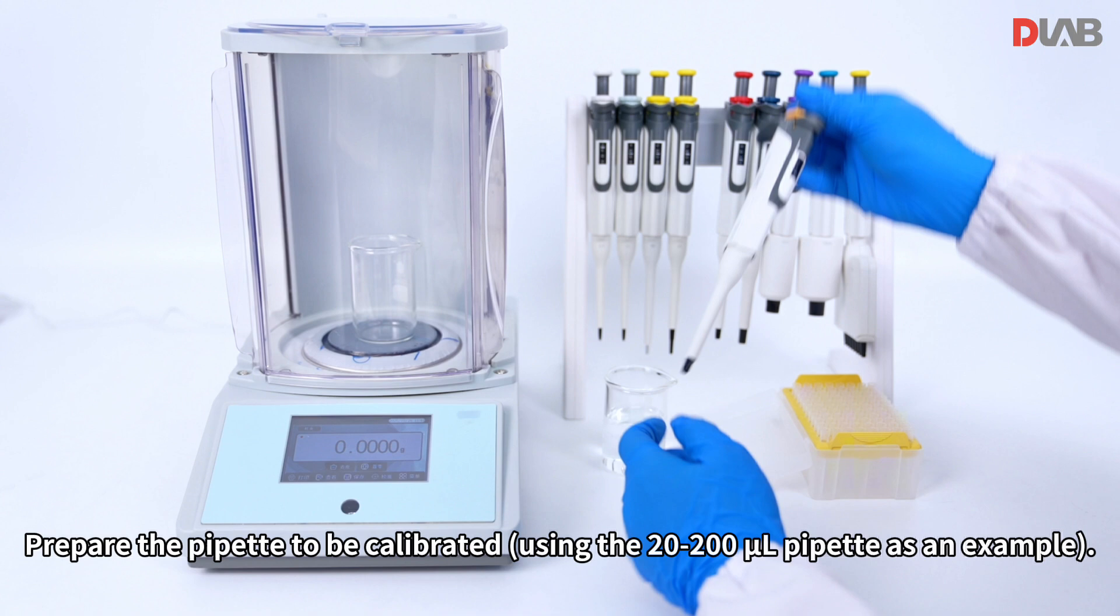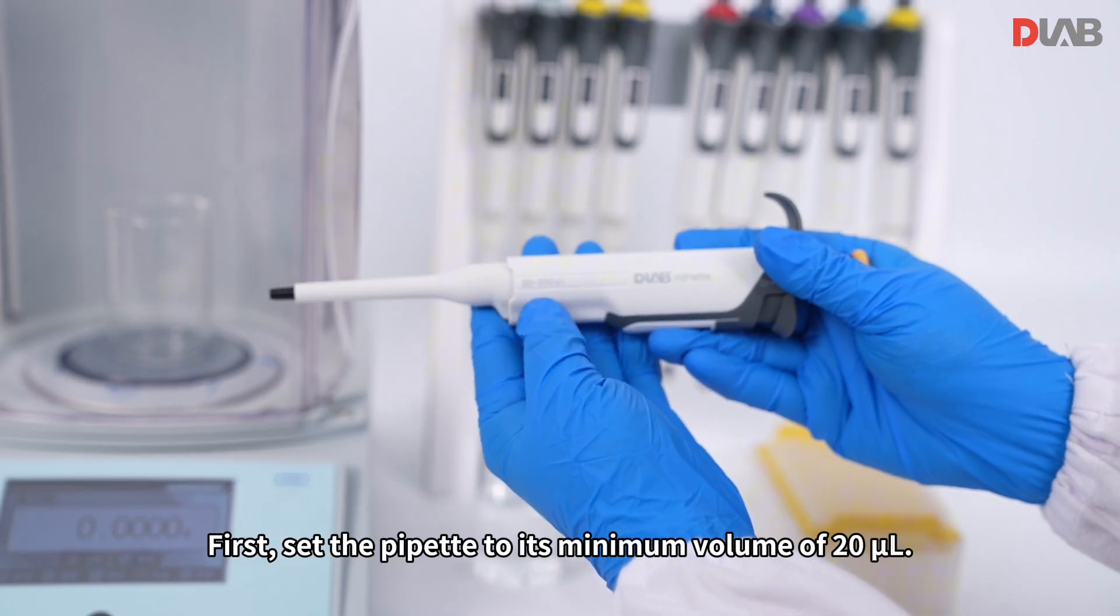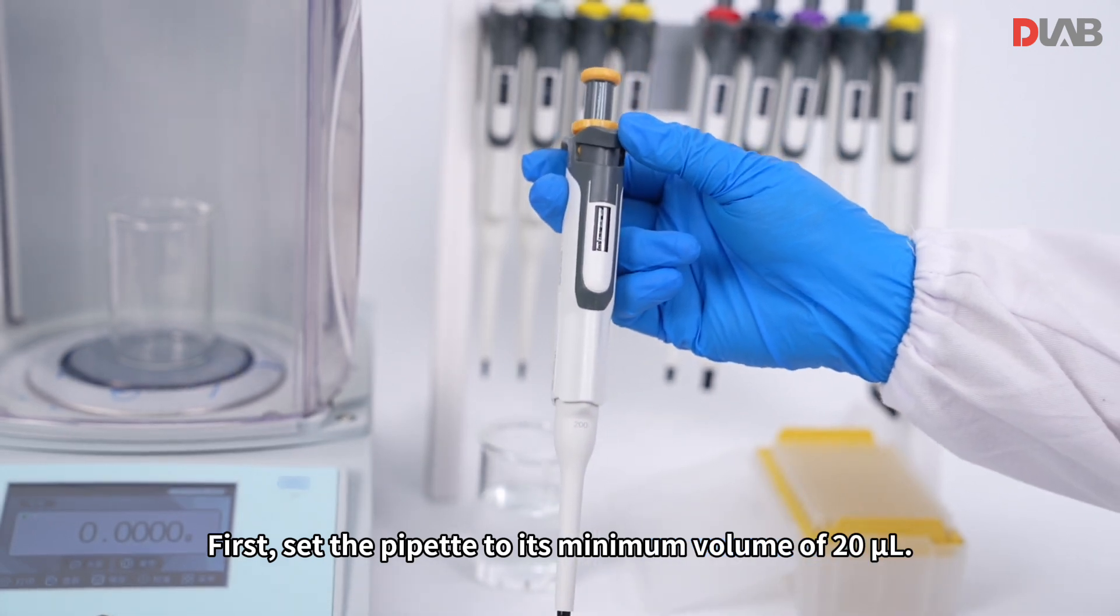Prepare the pipette to be calibrated. First, set the pipette to its minimum volume of 20 microliter.